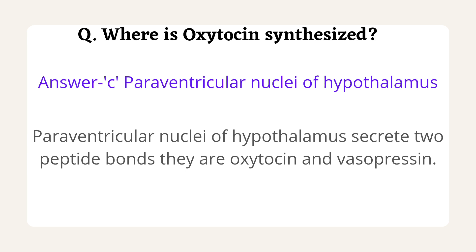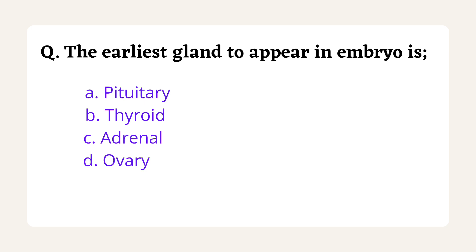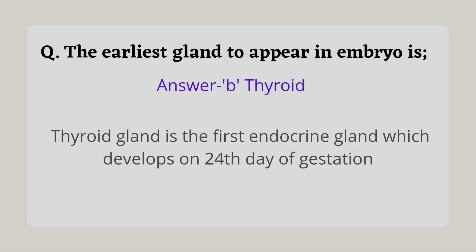The next question is: the earliest gland to appear in the embryo is — options are pituitary, thyroid, adrenal, and ovary. This question was asked in BSF Steno Exam 2015. The correct answer is option B. The thyroid gland is the first endocrine gland to develop, appearing around the 24th day of gestation.